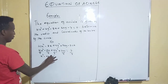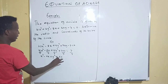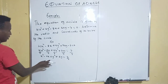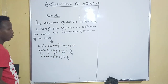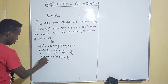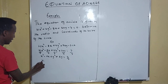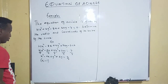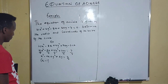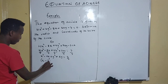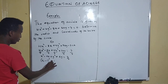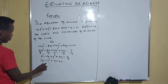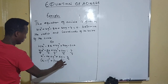After dividing by 4, we get x² - 2x + y² + 5y = 7/4. Now we complete the square: we add the square of half the coefficient of x and y to both sides. We write (x - 1)² + (y + 2.5)².